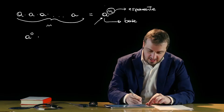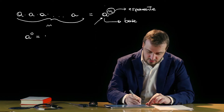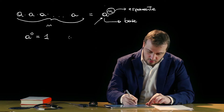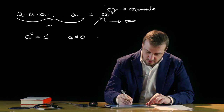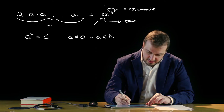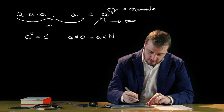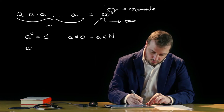Esistono alcune definizioni che vengono associate alle proprietà di base delle potenze, per cui a alla 0, quindi una potenza con esponente pari a 0, dà come risultato 1, questo se a, ossia la base, è diverso da 0 e appartiene ai numeri naturali. a alla 1 è uguale ad a.